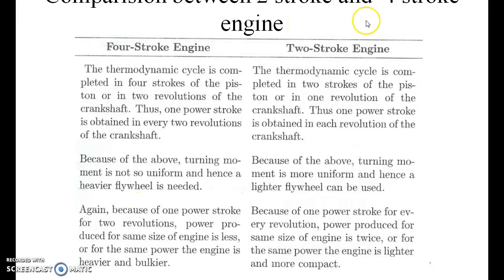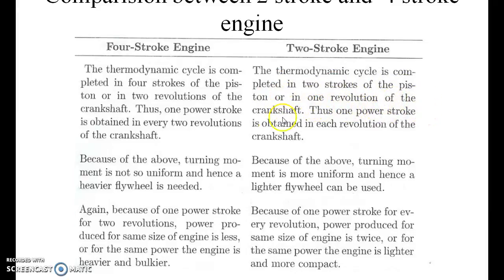Comparison between two-stroke engine and four-stroke engine. For the four-stroke engine, the thermodynamic cycle is completed in four strokes of the piston or in two revolutions of the crankshaft; thus, one power stroke is obtained in every two revolutions of the crankshaft. For the two-stroke engine, the thermodynamic cycle is completed in two strokes of the piston or in one revolution of the crankshaft; thus, one power stroke is obtained in each revolution. Because of this, the turning motion of a four-stroke is not so uniform and a heavier flywheel is needed, whereas the two-stroke has more uniform turning motion and hence a lighter flywheel can be used.